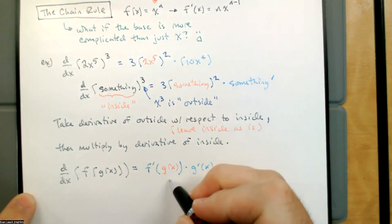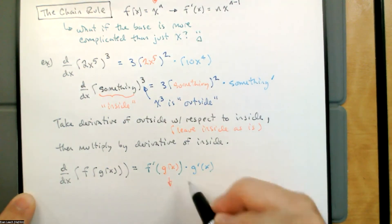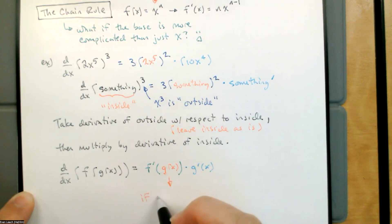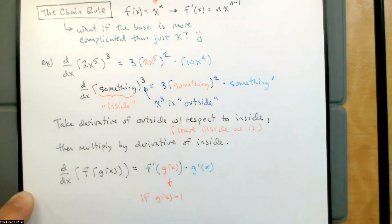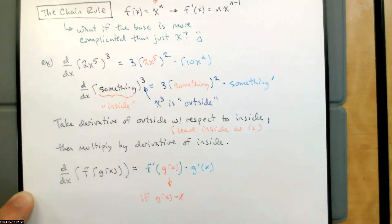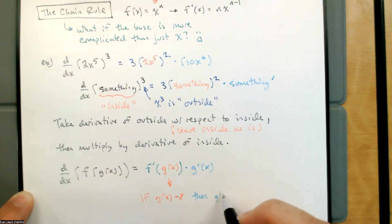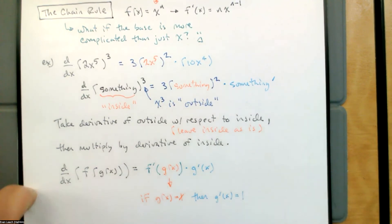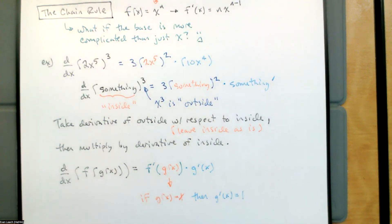When the inside is just x, like when we had x to the third, then the derivative of the inside was 1, and that's why we haven't been writing it — it hasn't been an issue up to this point. If g of x is equal to just plain old x, then g prime of x is equal to 1, and so we didn't write it. We didn't say 'times the derivative of the inside' because the derivative of the inside was always just 1 — like with x to the third, not stuff to the third.